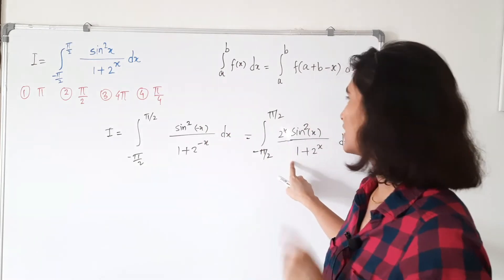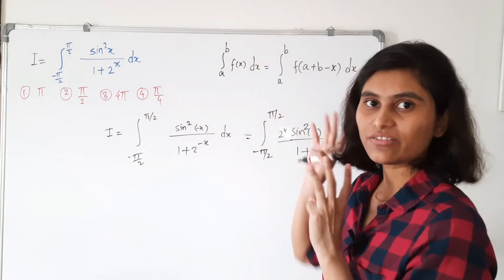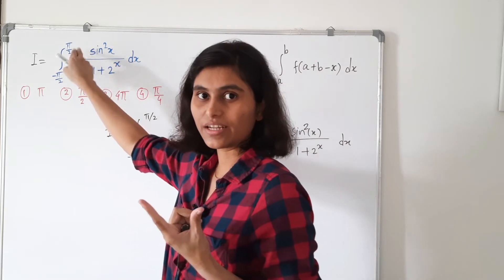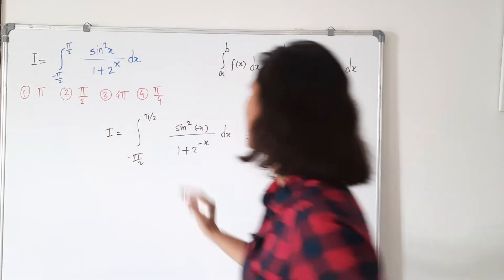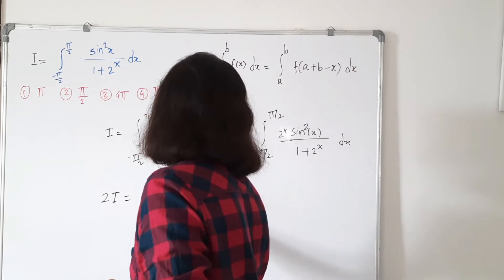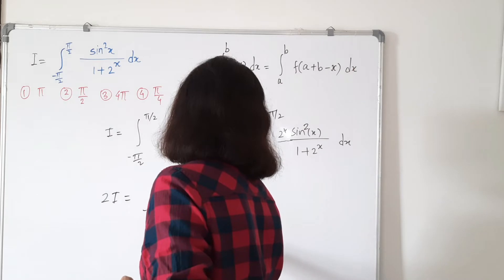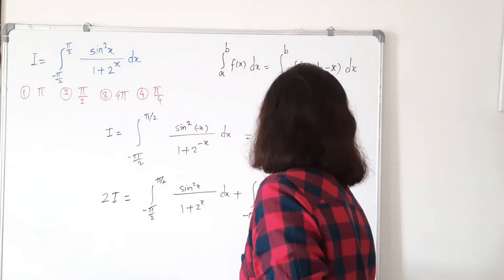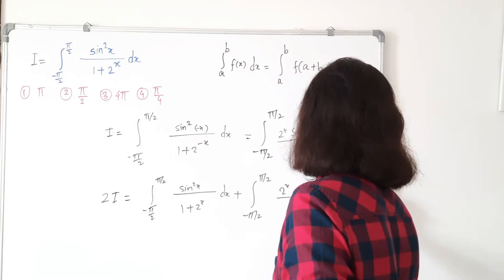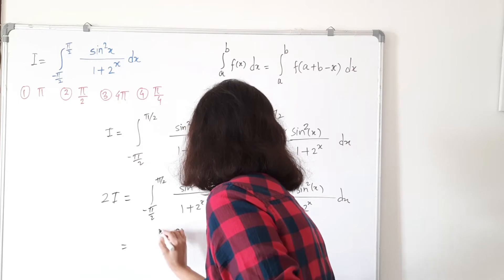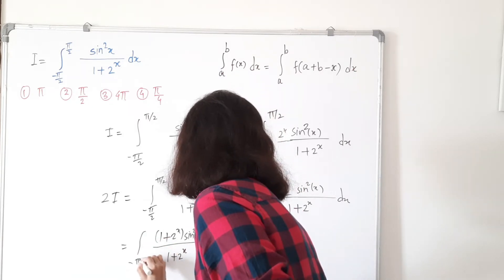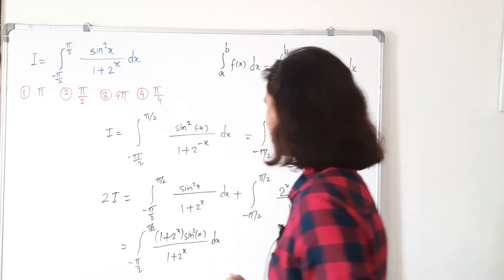If you observe these two integrals, in the first the denominator has 1 plus 2^x with numerator sin²x, and in the second we have this 2^x factor — we can treat the numerator coefficient as 1. So if we add these two, we get I plus I equals 2I, which is the integral from minus π/2 to π/2 of (1 plus 2^x) times sin²x divided by (1 plus 2^x) dx. This cancels nicely.